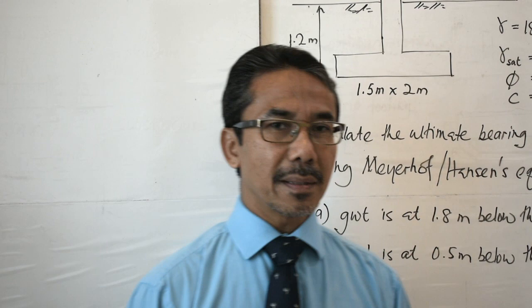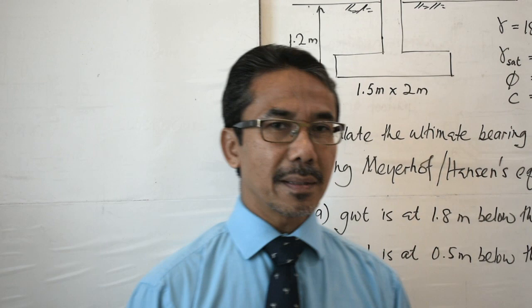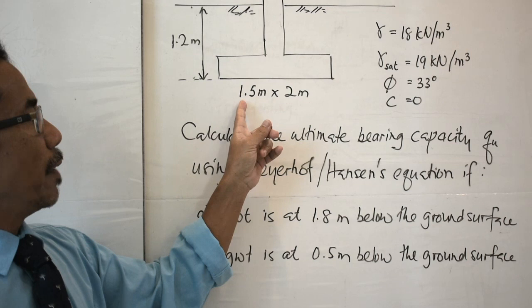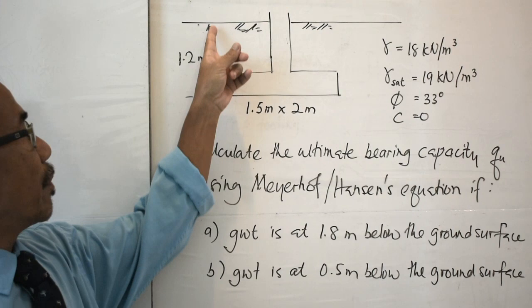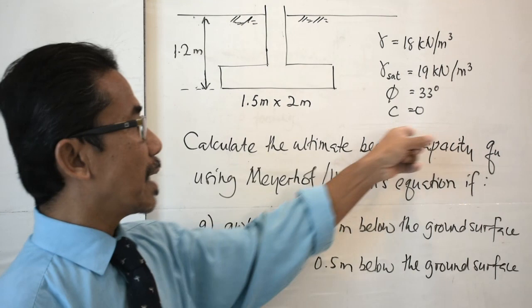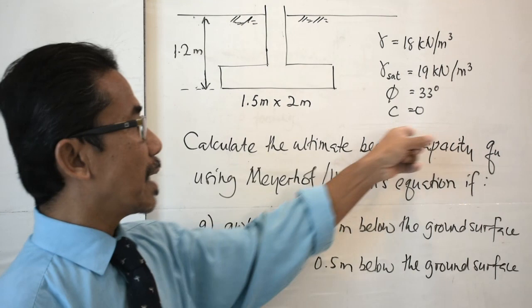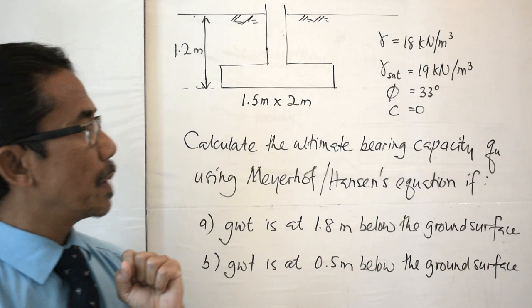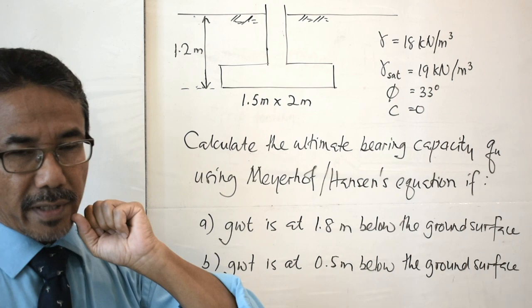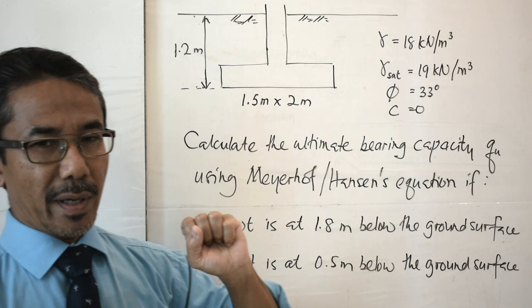Now let's look at one example of how to calculate ultimate bearing capacity with the presence of a groundwater table. We have a rectangular footing with dimensions 1.5 m × 2 m, and the depth of the footing from the ground surface to its base is 1.2 meters. The soil properties are: unit weight gamma = 18 kN/m³, saturated unit weight = 19 kN/m³, internal friction angle phi = 33 degrees, and cohesion c = 0 — meaning this is a granular material like sand or gravel.